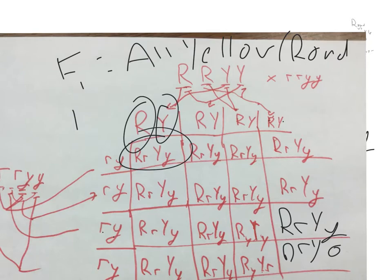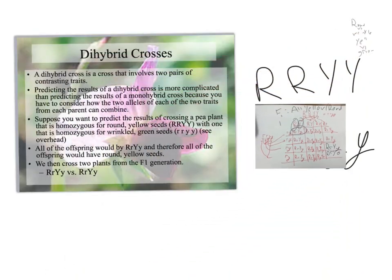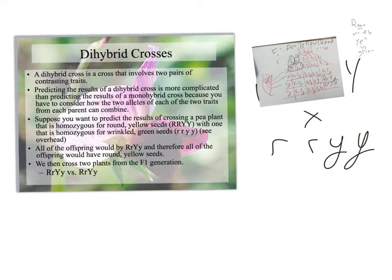But remember back to Mendel, it wasn't the F1 that really mattered, it's the F2. So what we're going to do then is cross this down here, and that's going to get us our next one. All you've got to do is create a giant Punnett square to get this done.